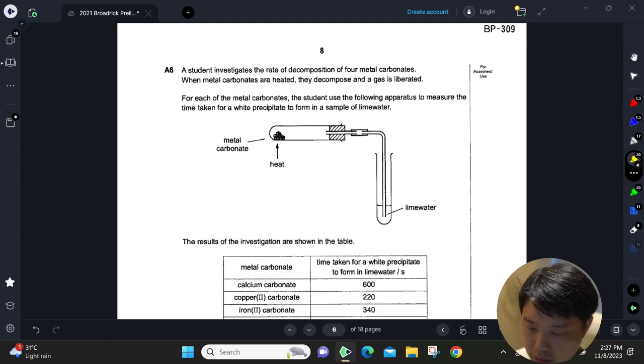Okay, for question six, we are looking at the rate of decomposition for metal carbonates. When metal carbonates are heated, they will decompose to form a metal oxide and carbon dioxide.